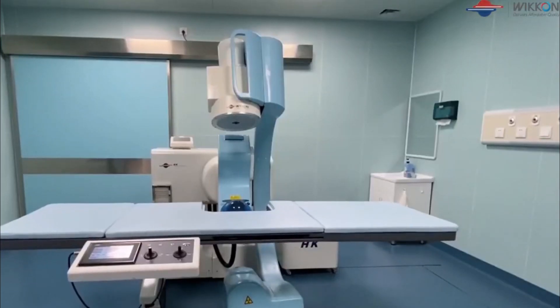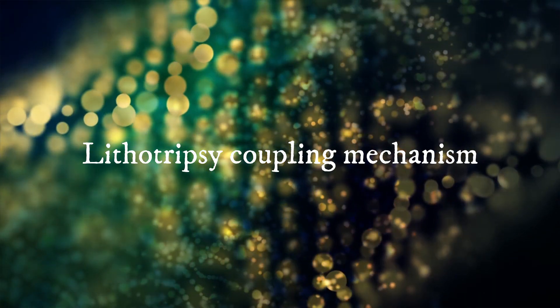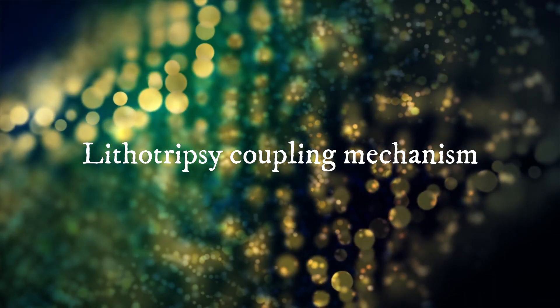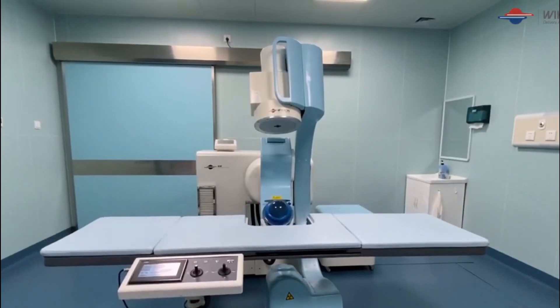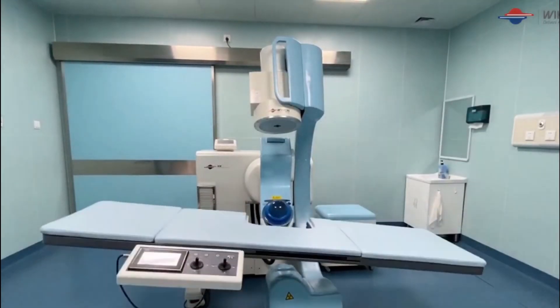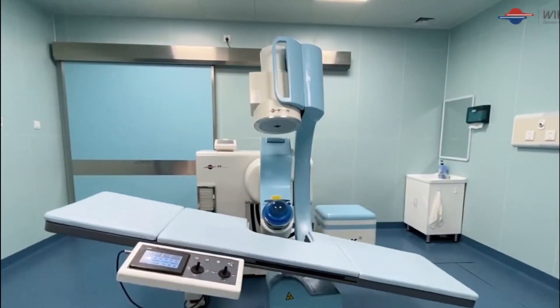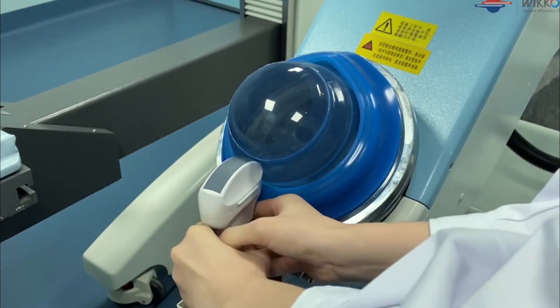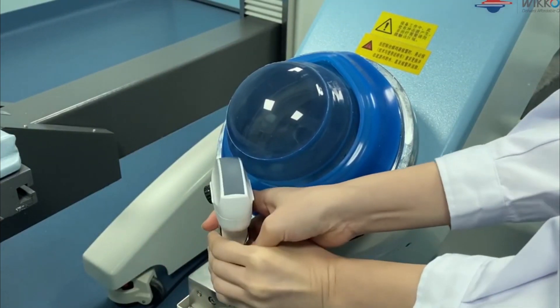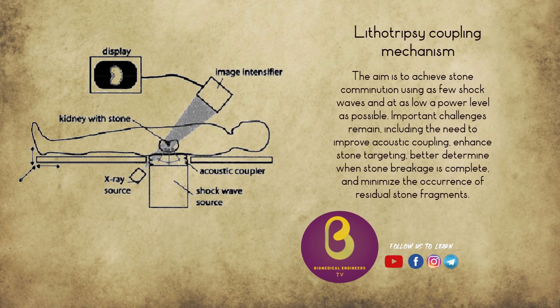The third component is the coupling mechanism. In the propagation and transmission of a wave, energy is lost at interfaces with differing densities. A coupling system is needed to minimize the dissipation of energy of a shockwave as it traverses the skin surface. The usual medium used is water, as this has a density similar to that of soft tissue and is readily available.